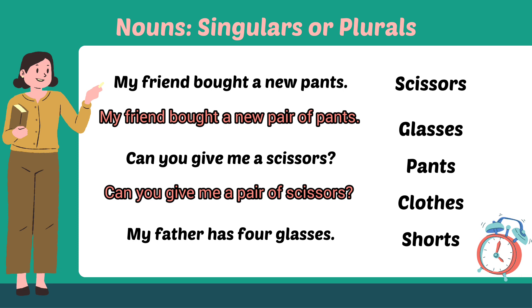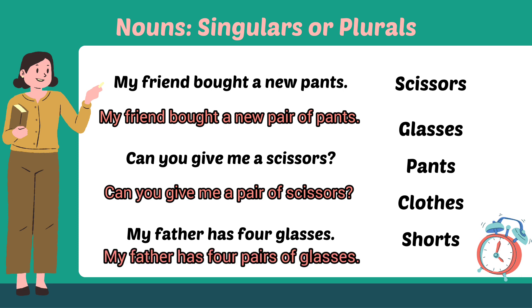My father has four glasses — this is incorrect. He has four pairs of glasses. So how do we write it correctly? My father has four pairs of glasses.